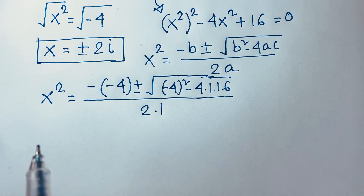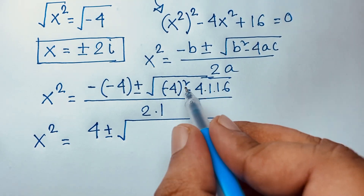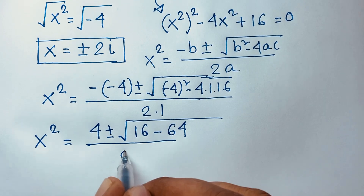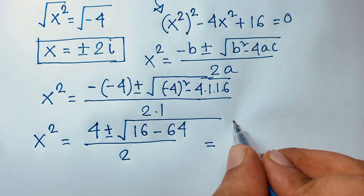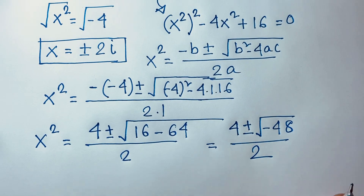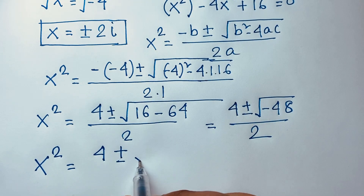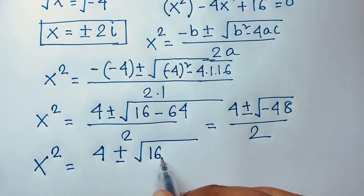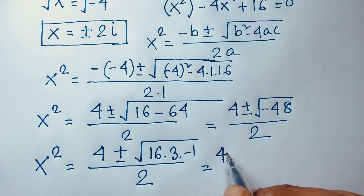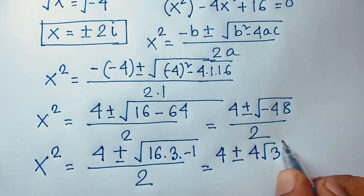Substituting: x squared equals positive 4 plus or minus square root of negative 4 squared minus 4 times 1 times 16, over 2 times 1. That gives 4 plus or minus square root of 16 minus 64, over 2, which is 4 plus or minus square root of negative 48, over 2. Now, 48 equals 16 times 3 times negative 1, so the square root of 16 times 3 times negative 1 gives 4 times square root of 3 times i, over 2.